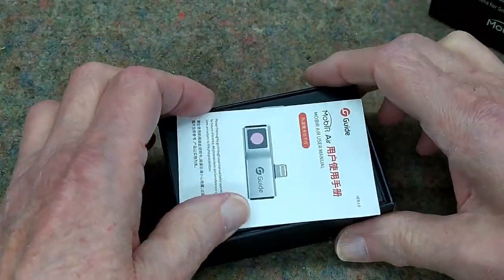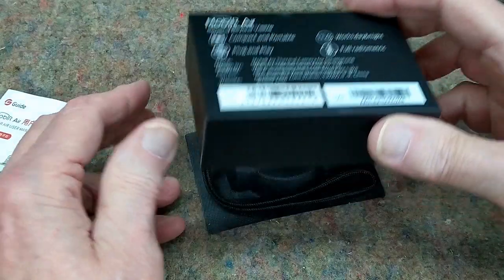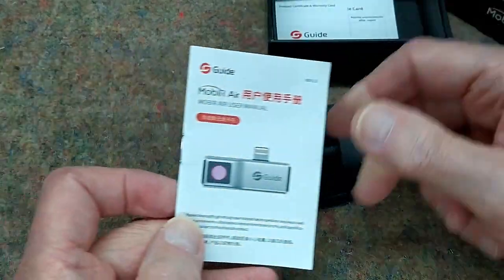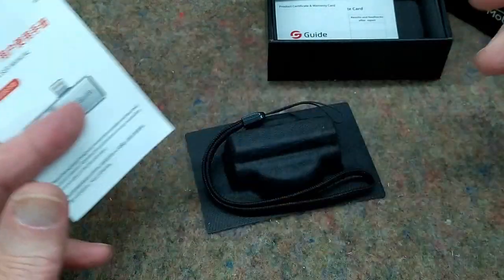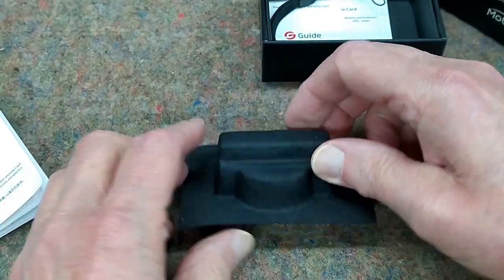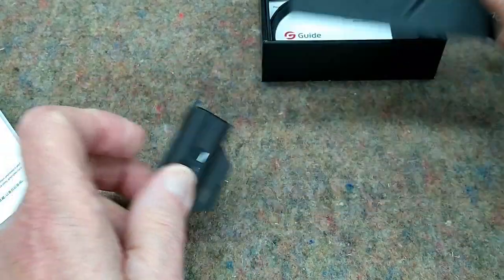This is a sturdy box. In here is the warranty card and an owner's manual of sorts, a little wrist strap or lanyard, and this is the insert for the box.